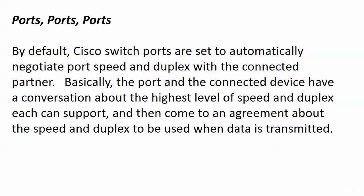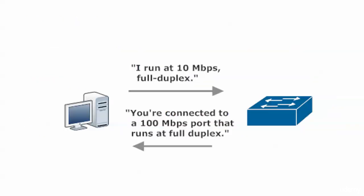We're going to talk about the speed and duplex settings in our Cisco switch ports. While they can be hard-coded, Cisco switch ports are now set to automatically negotiate, or auto-negotiate, that port speed and duplex with their connected partner. The port and the connected device have a quick conversation about the highest level of speed and whether each one can support full duplex or half duplex, then come to an agreement about the speed and duplex to be used when data is actually transmitted.